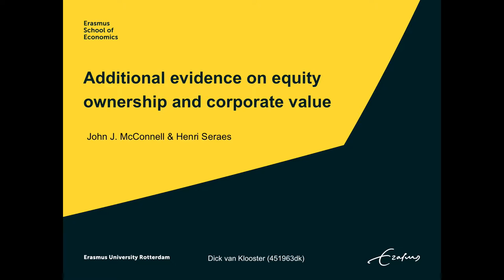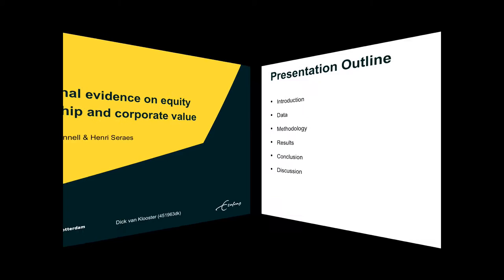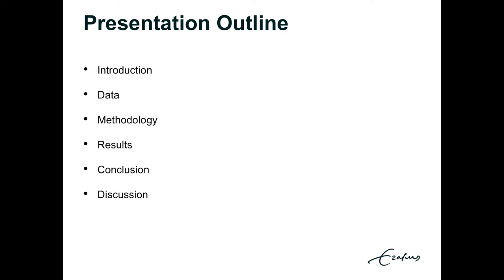Hi everybody, my name is Dick van Klooster and in this presentation I will discuss the paper 'Additional Evidence on Equity Ownership and Corporate Value' written by John McConnell and Henry Sirius. Before we start I would like to show you the presentation outline. We will start with the introduction, followed by the data, then the methodology, the results, and we will finish with the conclusion and some discussion points.